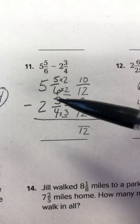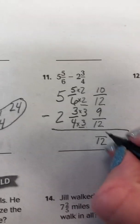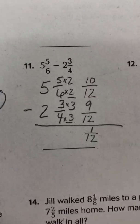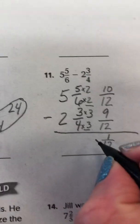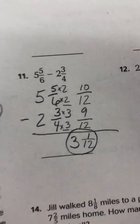So we are subtracting, so make sure you watch your signs. Subtract only the numerators. 10 minus 9 is 1. And now we're going to subtract our whole numbers. 5 minus 2 is 3. So your final answer here is 3 and 1 twelfth.